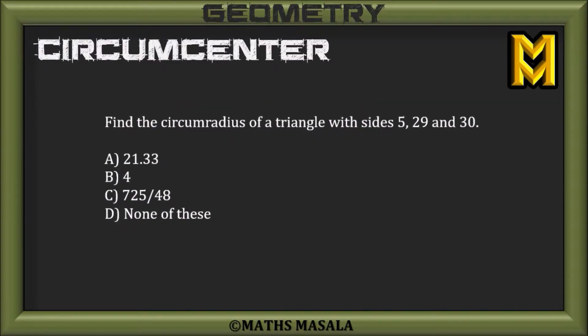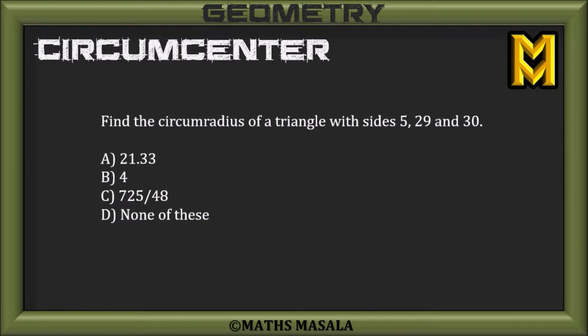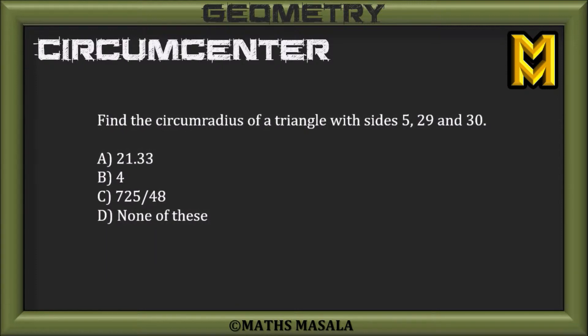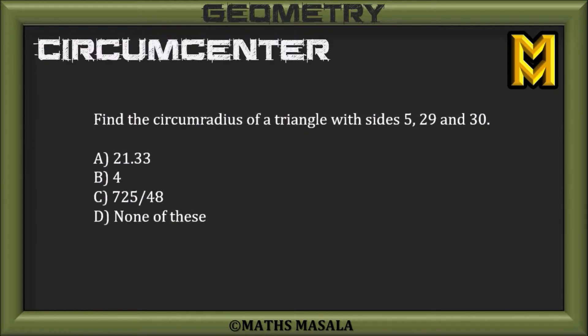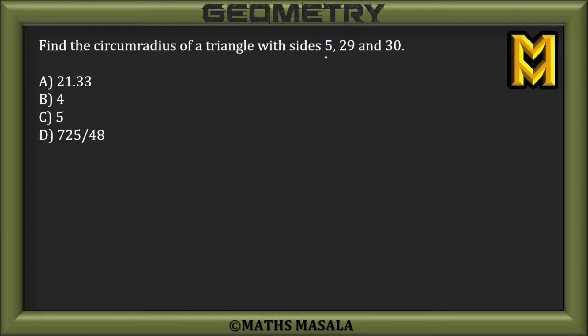The question states: find the circumradius of a triangle with sides 5, 29, and 30. I'm given four options to choose from. Well, from the sides itself, it